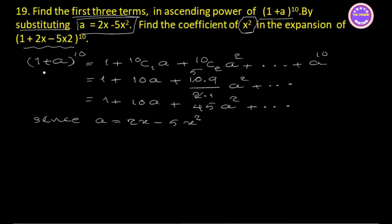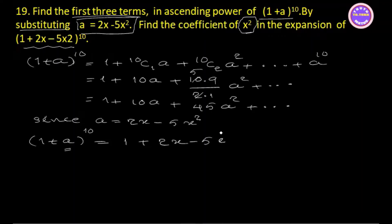So 1 plus a, the whole power of 10, is equal to 2x plus 5, the whole square of 10. So 1 plus a, the whole power of 10, is equal to 2x minus 5x squared.